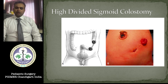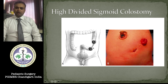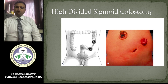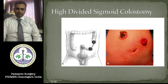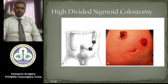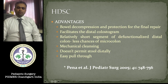You can make the stoma at the descending colon — at the end of the descending colon or the proximal part of the sigmoid colon. Even the distal stoma for the pull-through is quite adequate.